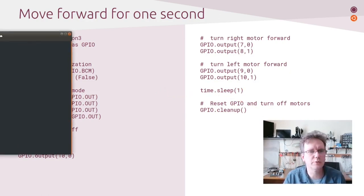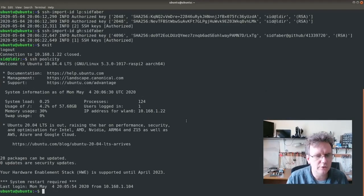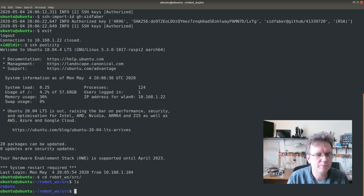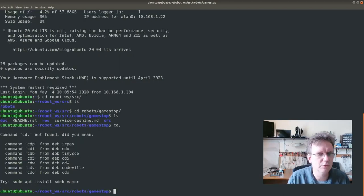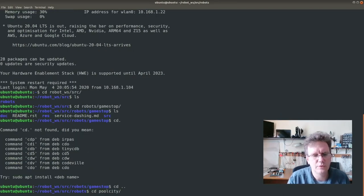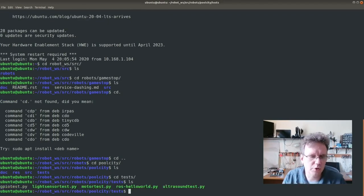So let's take a look at how this actually works. First thing I want to do is log into my robot. So now, if you recall, we pulled down the code. We're going to go take a look at that code. It's in our robot workspace under the source code. And this robot is Pool City.